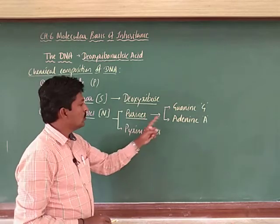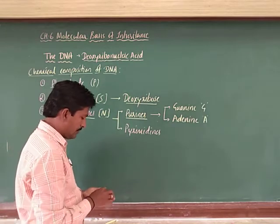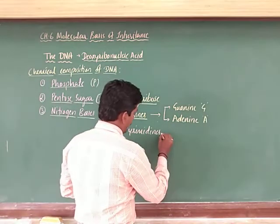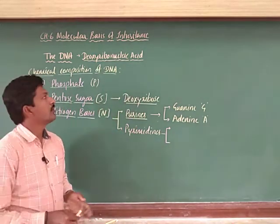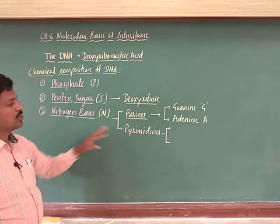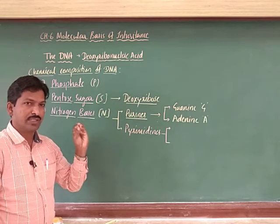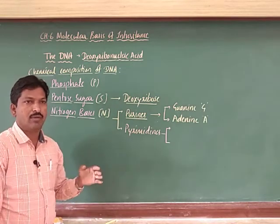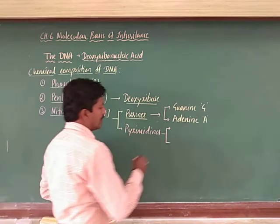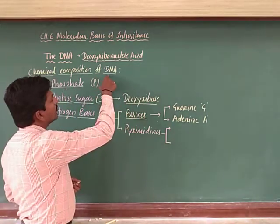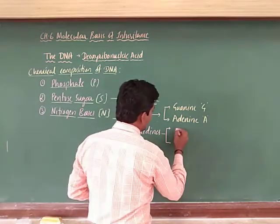Adenine and guanine are the two purines present in DNA. There are also two pyrimidines. In any nucleic acid — either DNA or RNA — there should be four nitrogen bases. In DNA, the pyrimidines are thymine and cytosine.